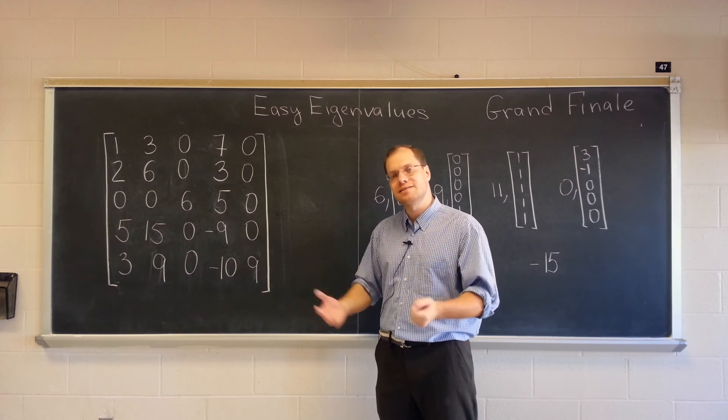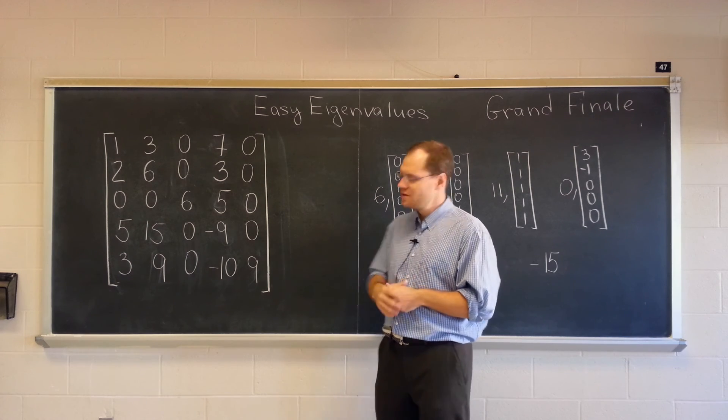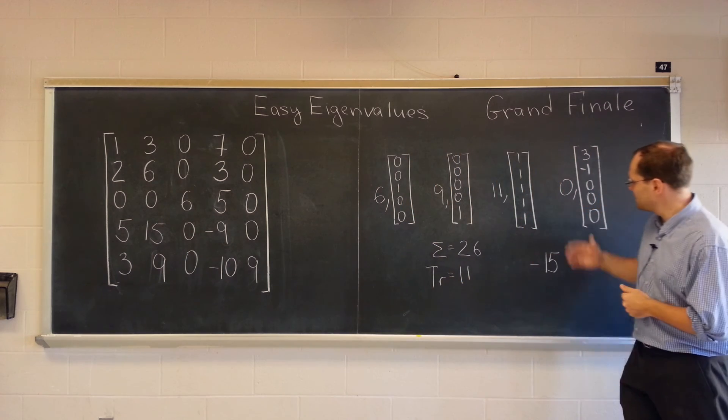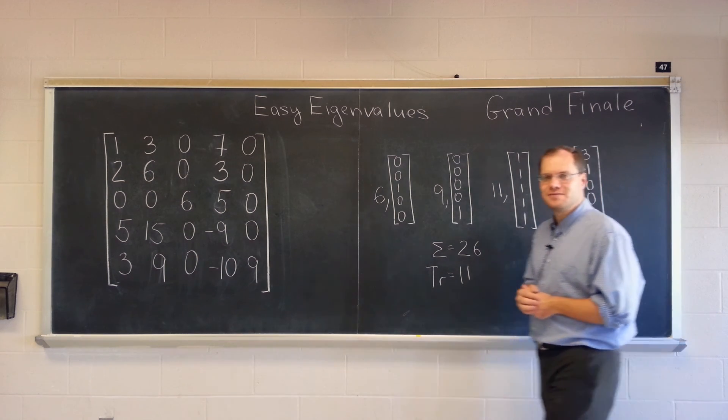And having gained all of this insight into eigenvalues and special features that give away the eigenvalues. We were able to see four eigenvalues in the corresponding eigenvectors. And the fifth eigenvalue as well. All right.